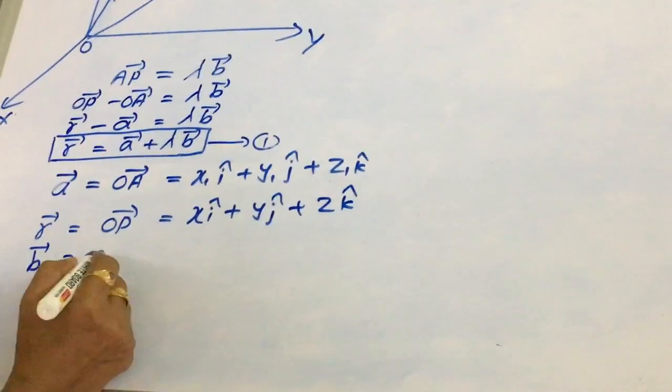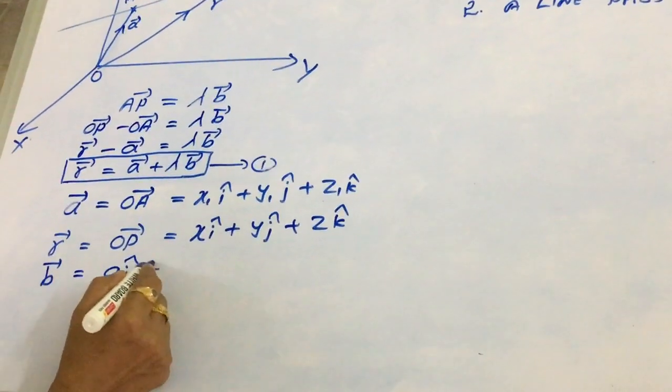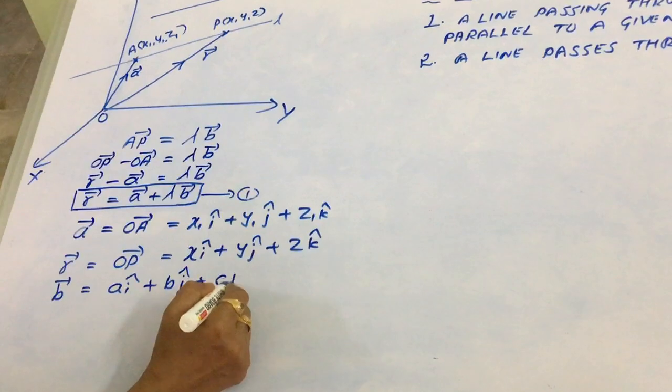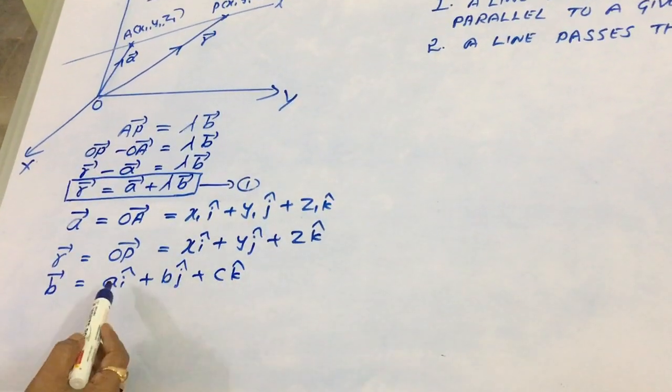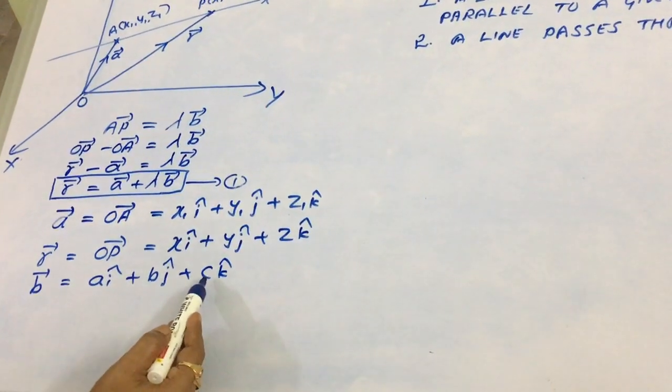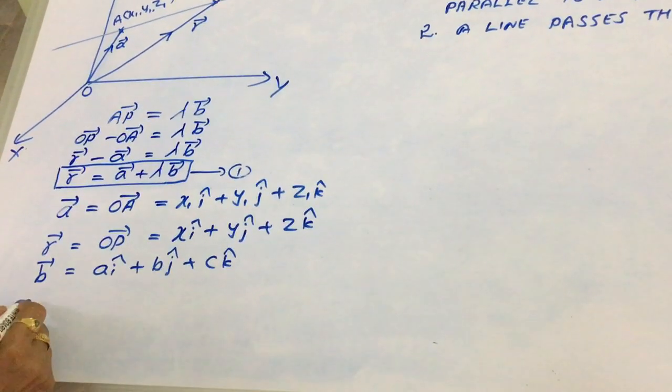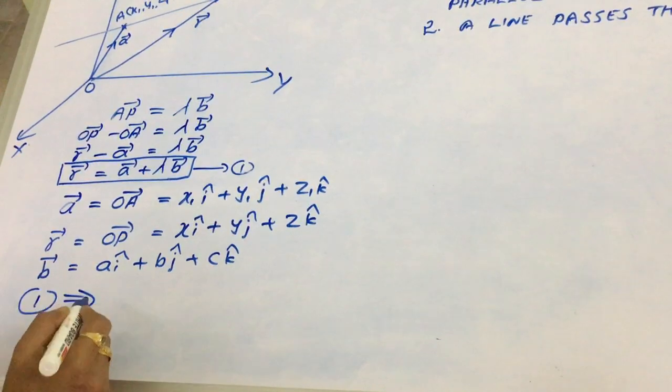Along with this, vector B equals A i-cap plus B j-cap plus C k-cap, where A, B, C are the direction ratios of vector B. Substituting all these values in equation 1,